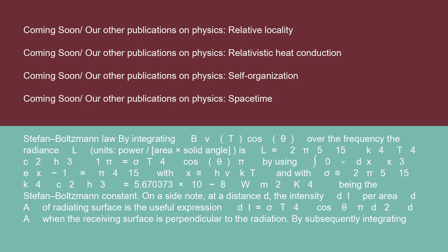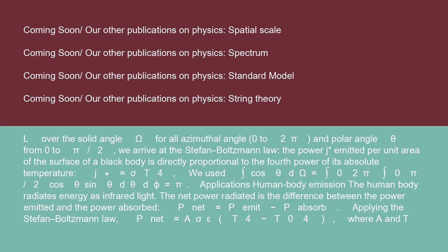On a side note, at a distance d, the intensity dI per area dA of radiating surface is given by the useful expression dI = σT⁴·cosθ/(π·d²) · dA when the receiving surface is perpendicular to the radiation. By subsequently integrating L over the solid angle ω for all azimuthal angles (0 to 2π) and polar angles θ (from 0 to π/2), we arrive at the Stefan-Boltzmann Law.